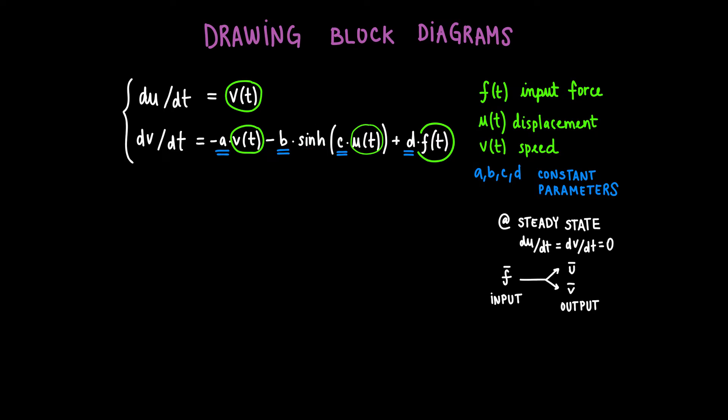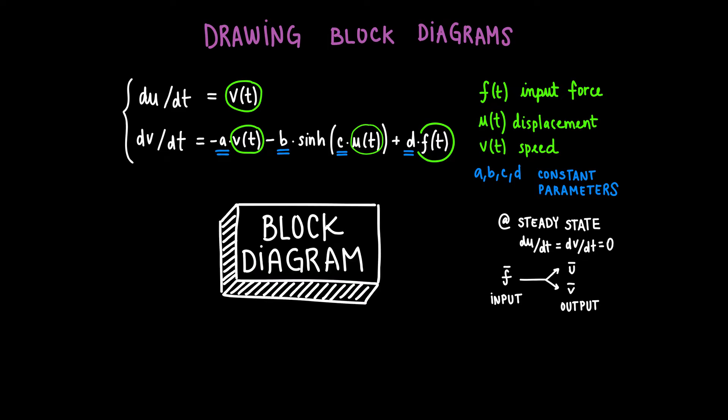It is also worth noting that under steady-state conditions, the terms on the left-hand side of both equations, du/dt and dv/dt, would equal zero. You can use this reality to find the steady-state values of the state variables u and v, given a certain steady-state input F. Now that we have clarified the system, let's dive into it.